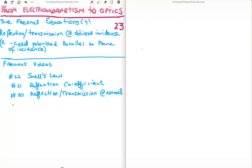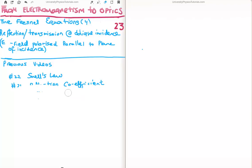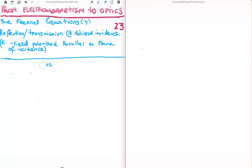The previous videos to this which are relevant are as follows. In number 22 I discussed Snell's law. In number 21 I derived the reflection coefficient for normal incidence, and I discussed reflection and transmission at normal incidence in video number 20. We're going to discuss the Fresnel equations — they're one of the important results from classical optics, and a lot of the optics which you will use will be derived from the results of the Fresnel equations.